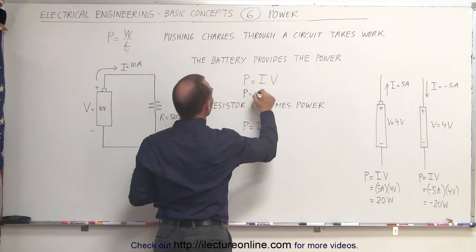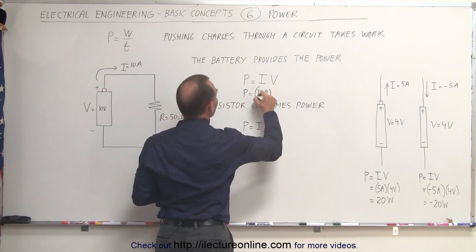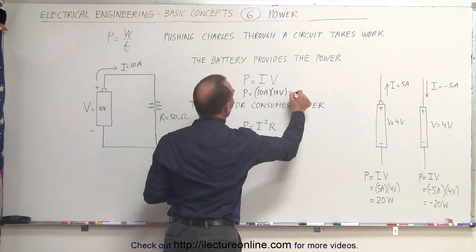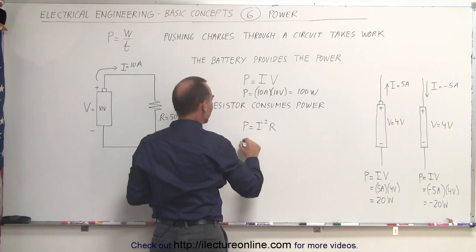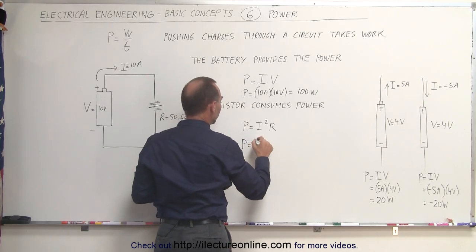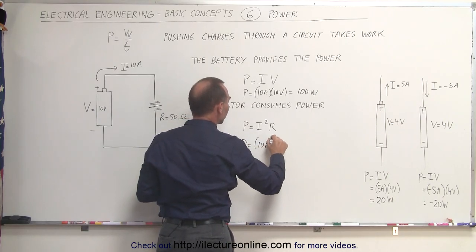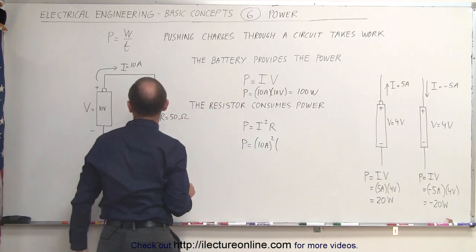In this case, the power provided by the battery is equal to 10 amps times 10 volts, which is equal to 100 watts.